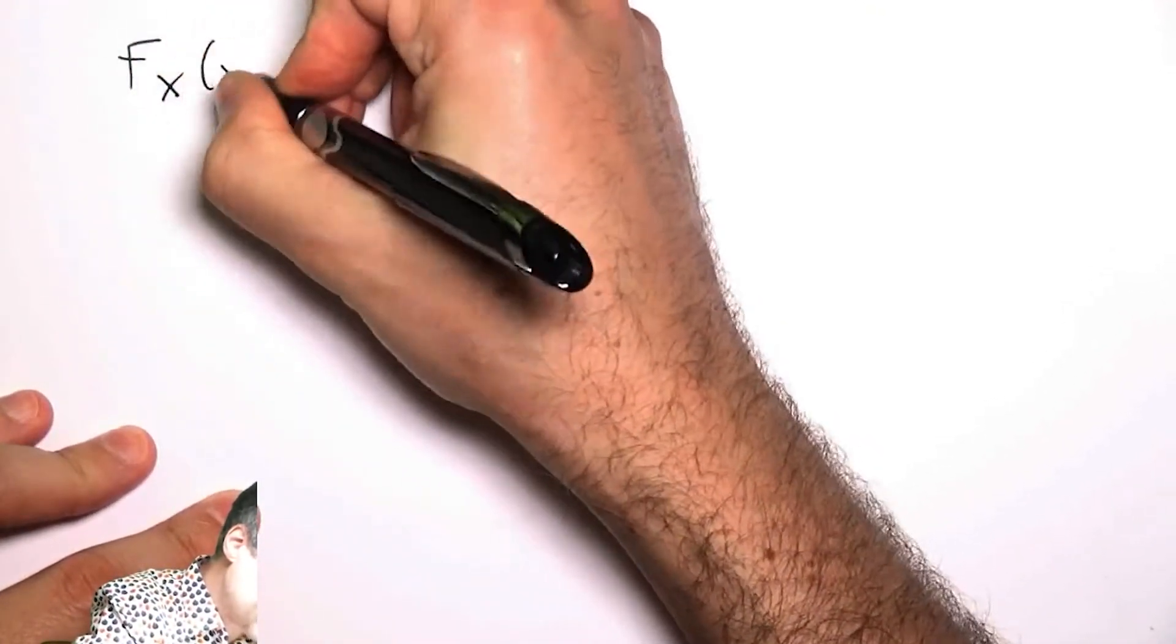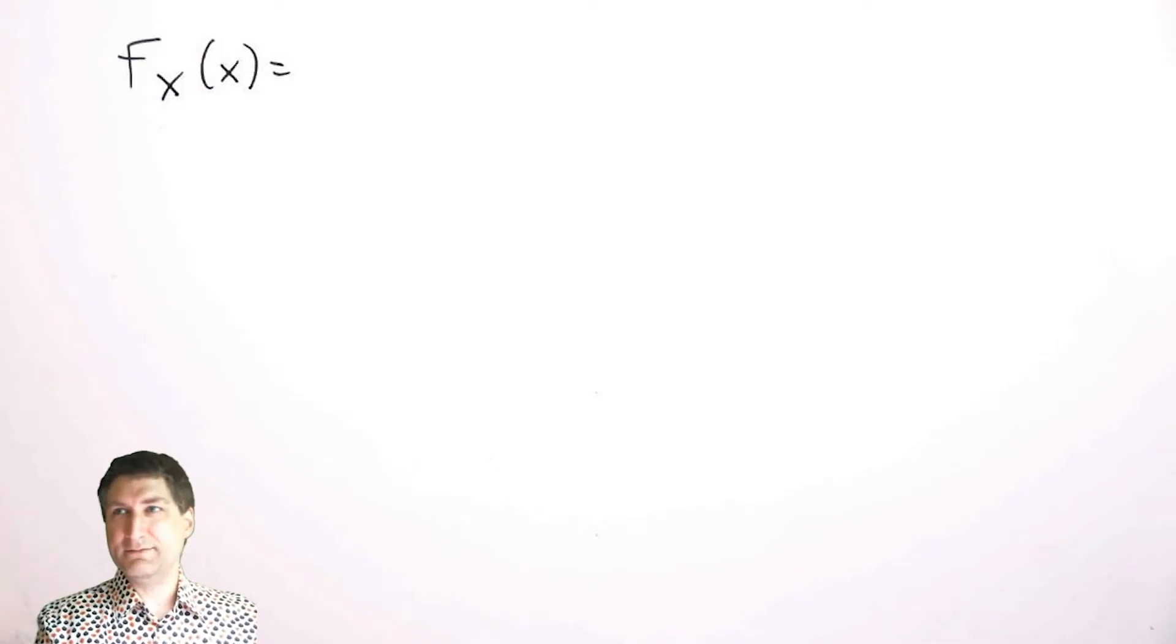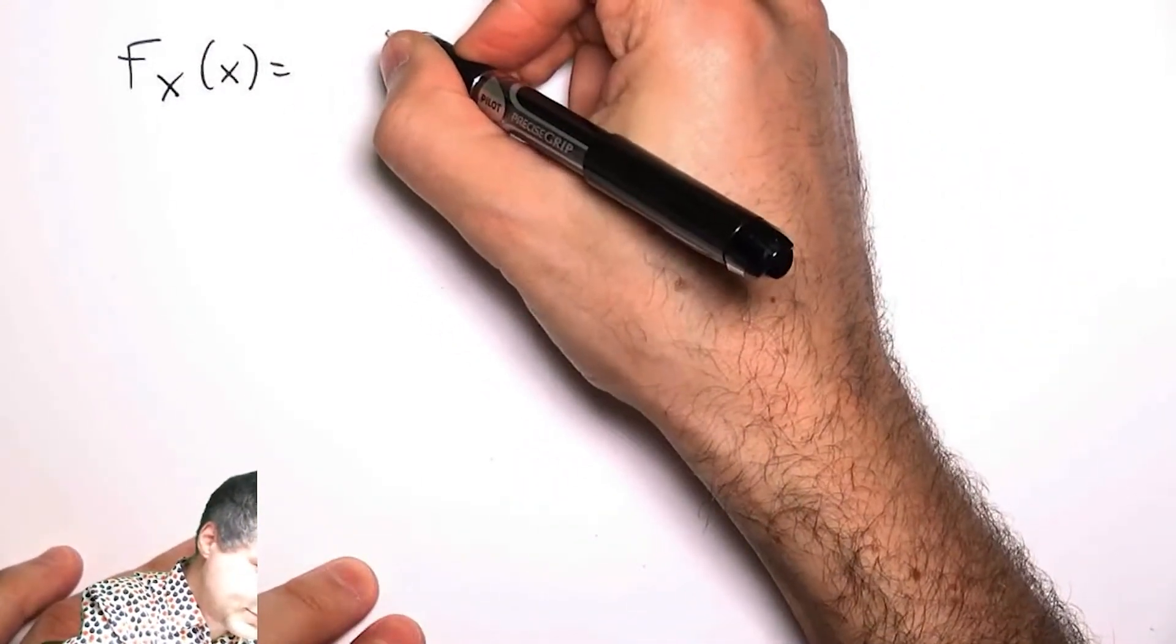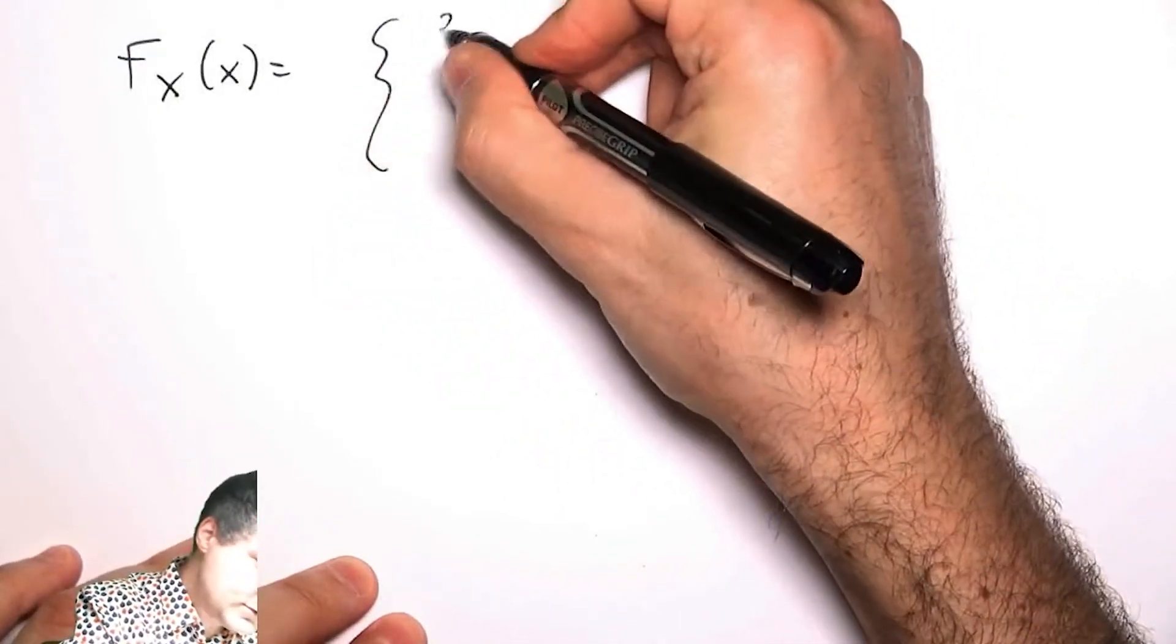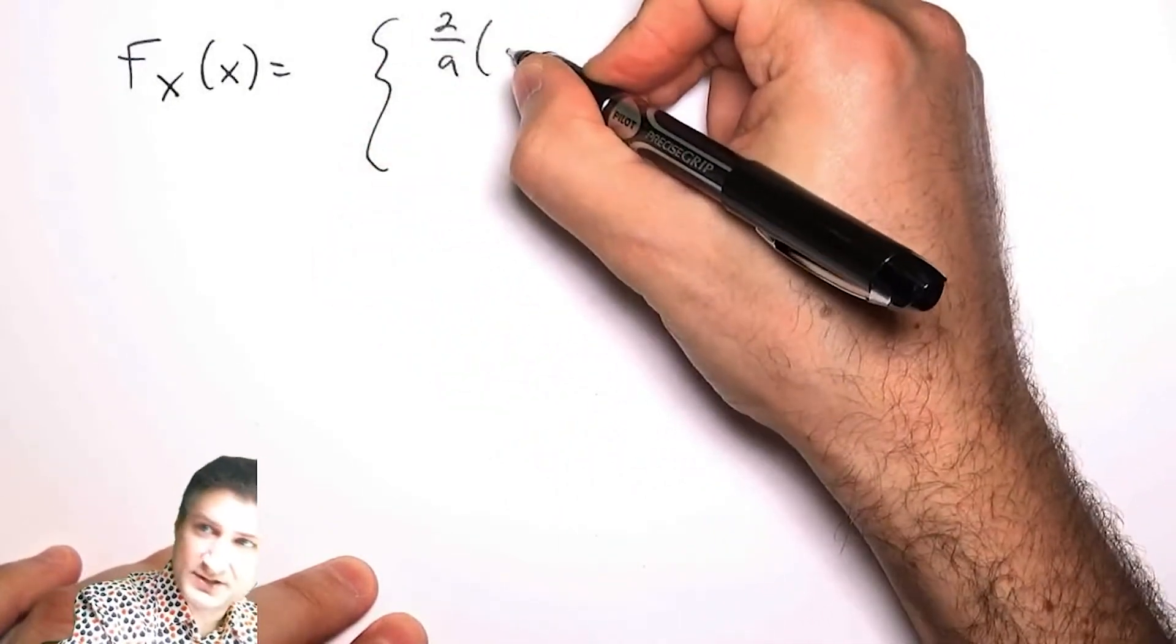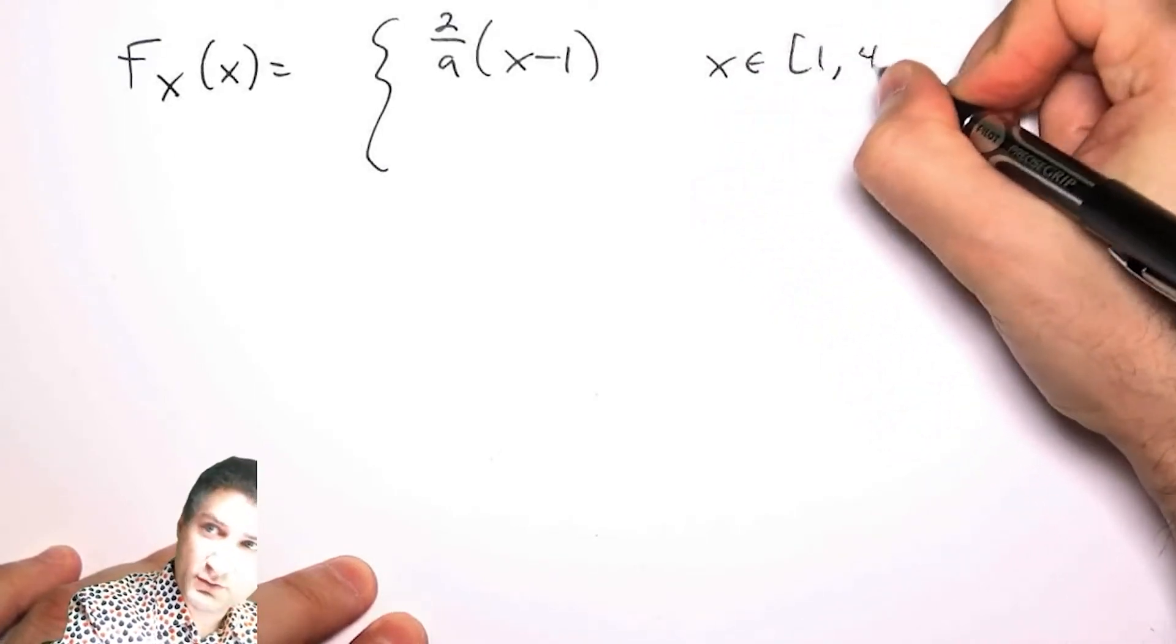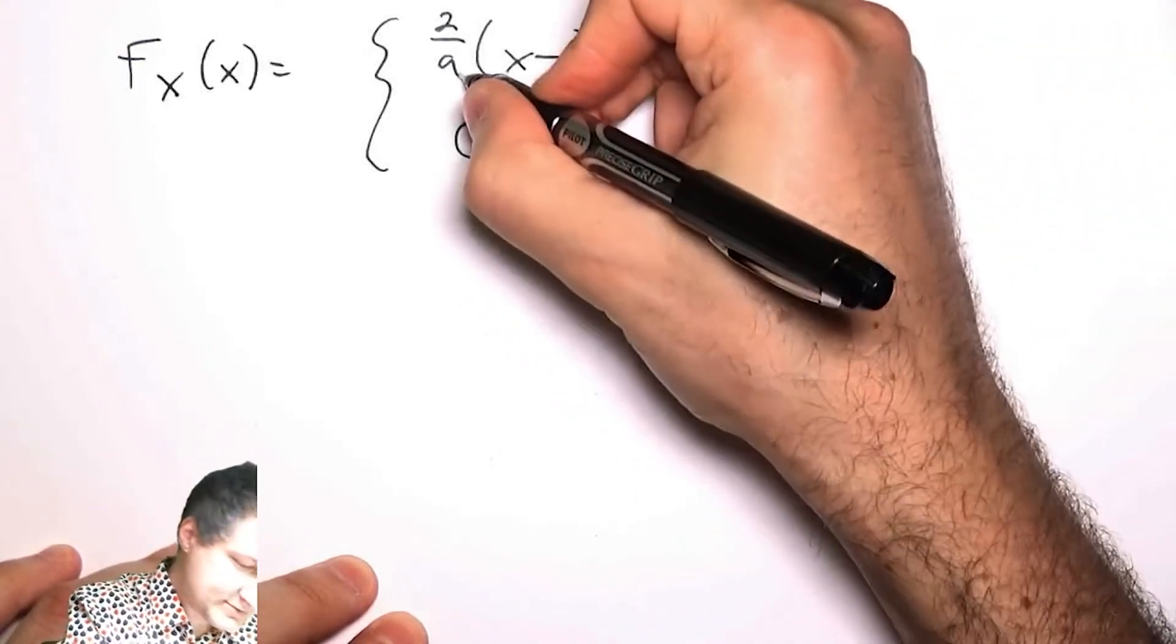Let me do a practice problem here. This is going to be a PDF that doesn't have a nice name; it's just one that I made up. So let's suppose f_X(x) equals 2/9(x-1) when x is between 1 and 4, and zero otherwise.